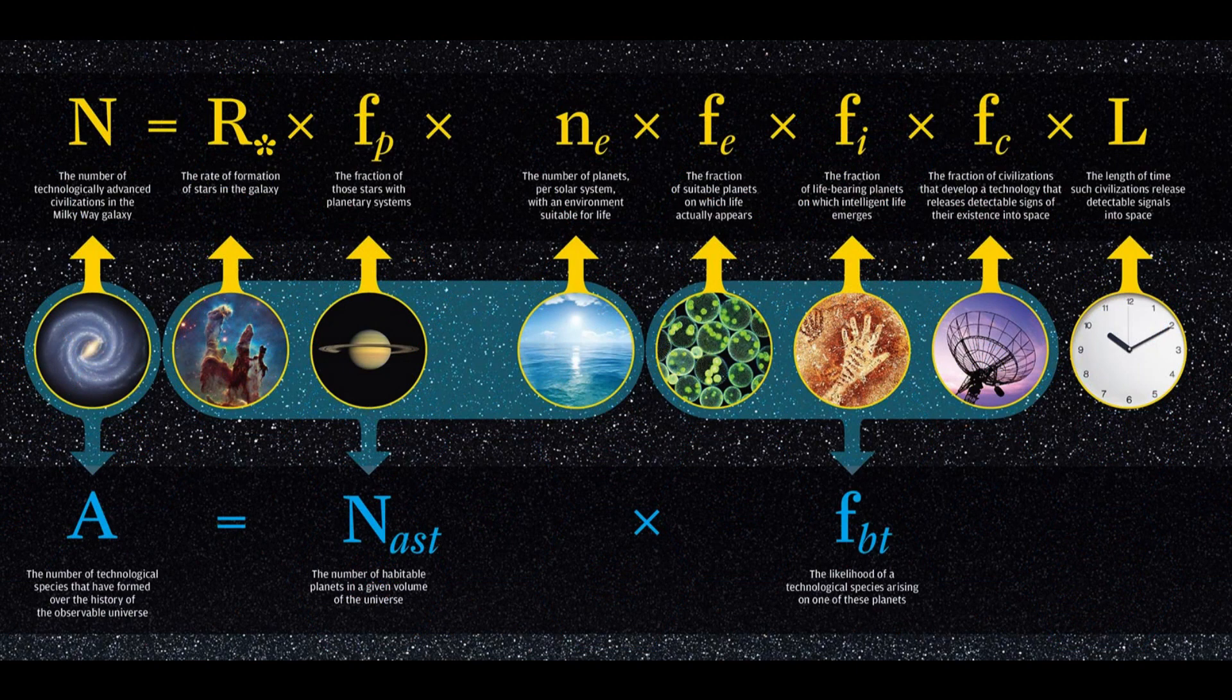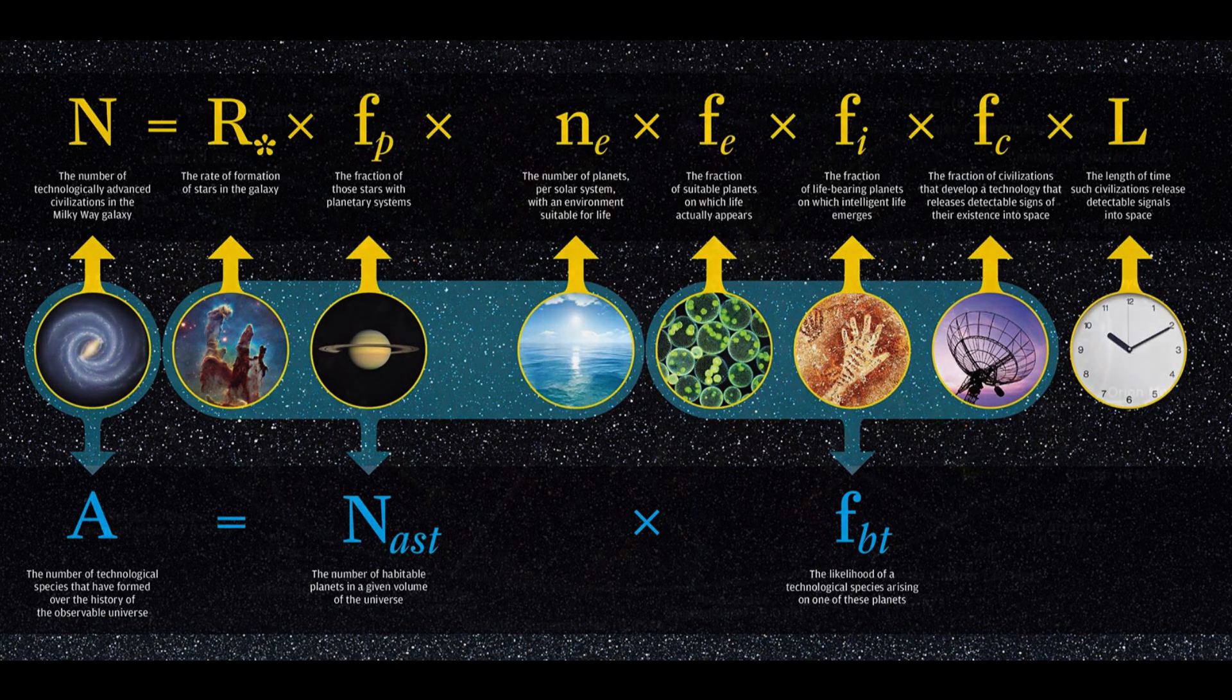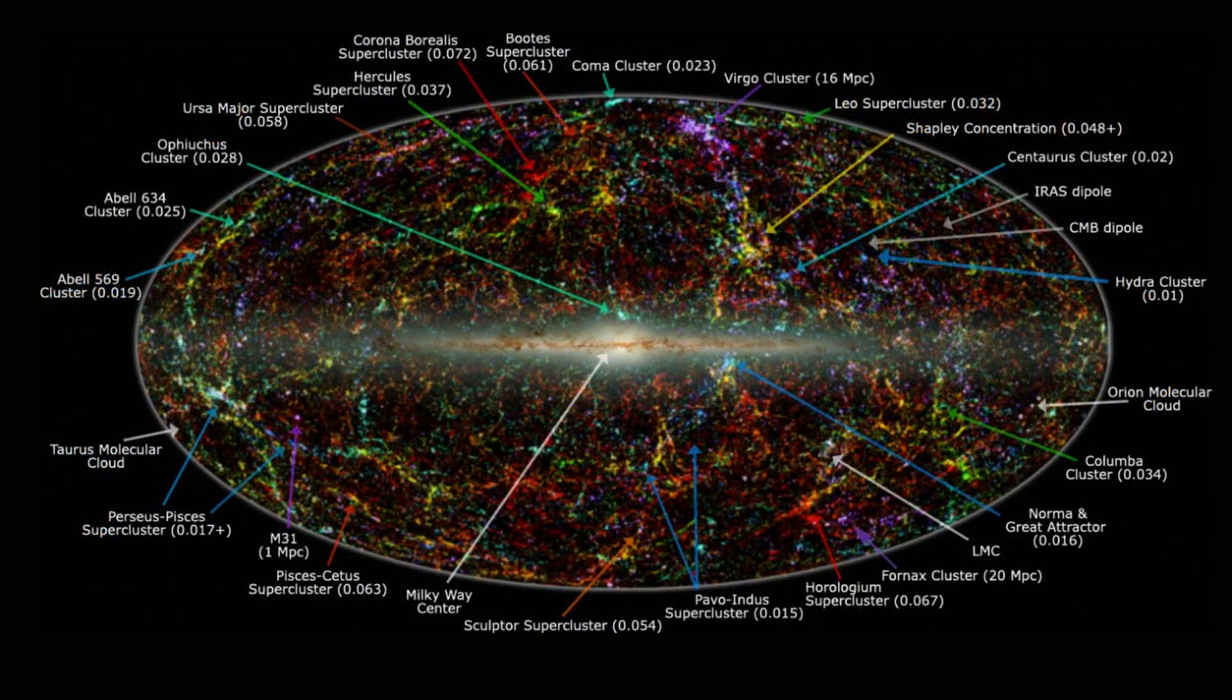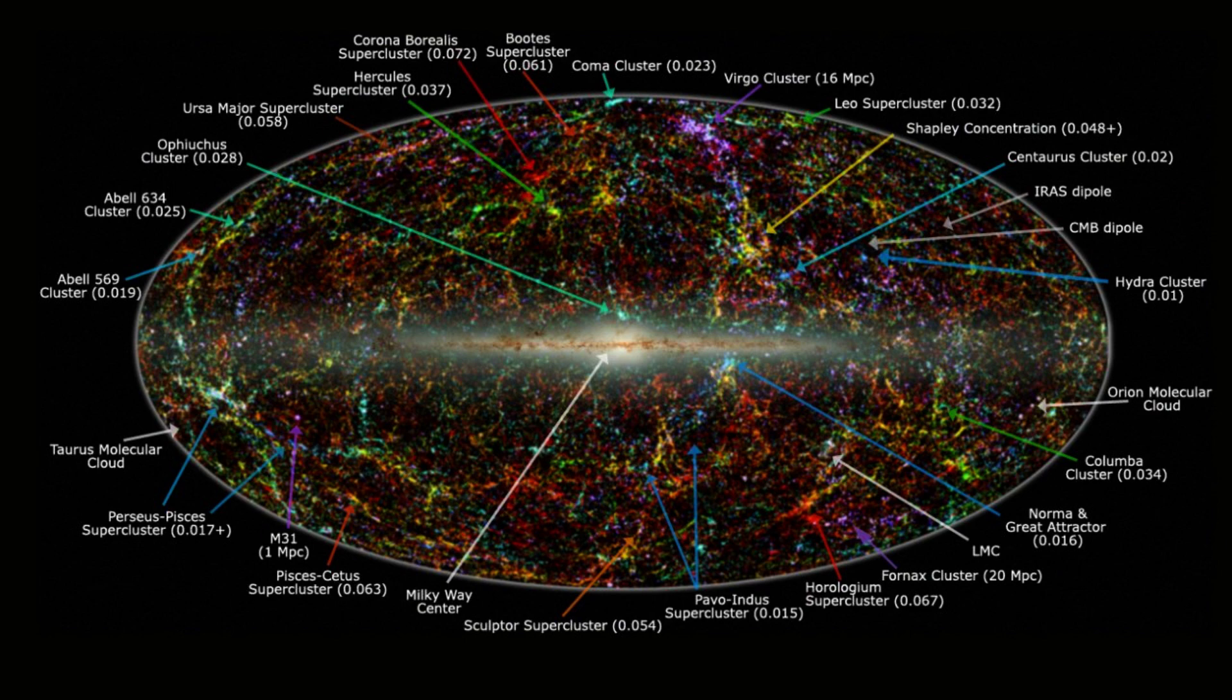The Drake equation is a mathematical formula used to estimate the number of intelligent civilizations in the Milky Way galaxy. The Great Attractor is a mysterious gravitational anomaly in the direction of the constellation Centaurus that is pulling the Milky Way and many other galaxies towards it.